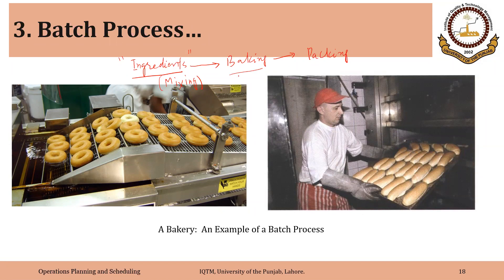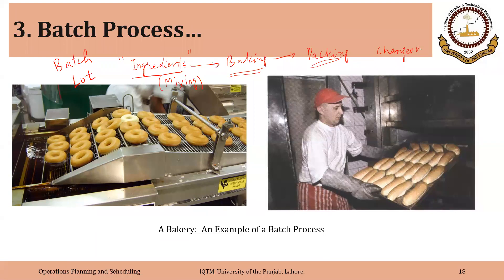You will use the same equipment — for example, the same oven for baking and the same resources for packing. The quantity of one type of product being made is called a batch, or also called a lot. Switching between two types of product on the same equipment requires some time, called changeover time or setup time. Reducing this changeover or setup time is very important in batch processes.